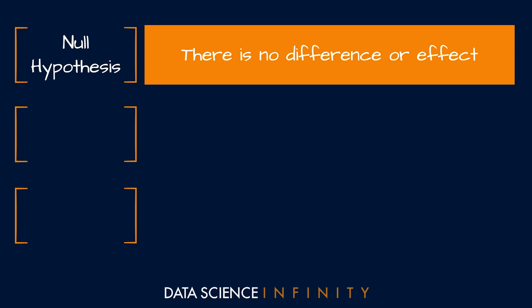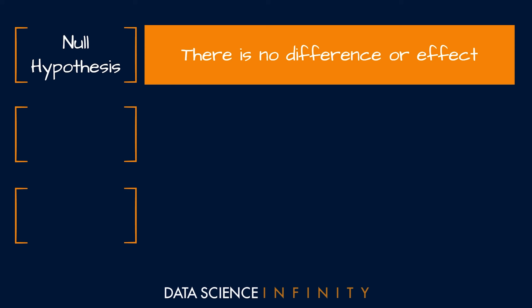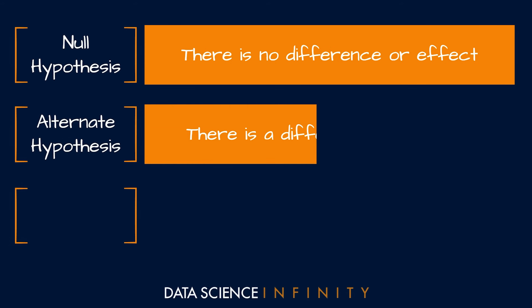Back to my former friend Honest Pete: our null hypothesis was that nothing dodgy was going on — in other words, the viewpoint that Honest Pete's coin was fair. The second thing needed for a hypothesis test is the alternate hypothesis. As discussed, this is essentially the opposing view to the null hypothesis — that there is a difference or effect in what we are testing.